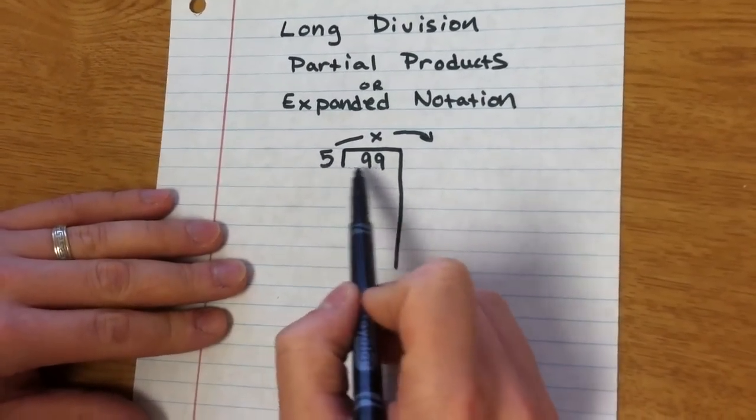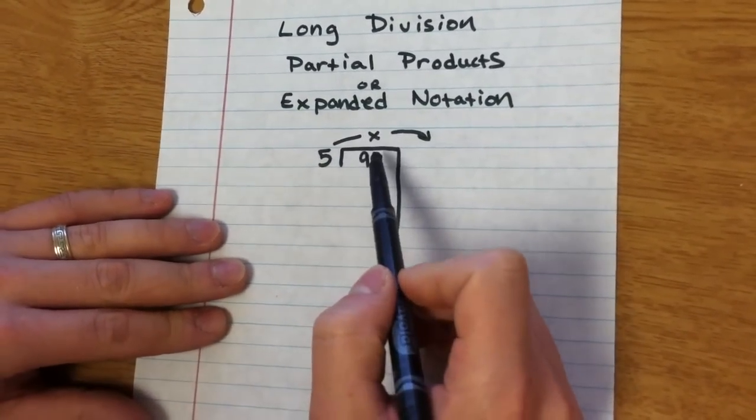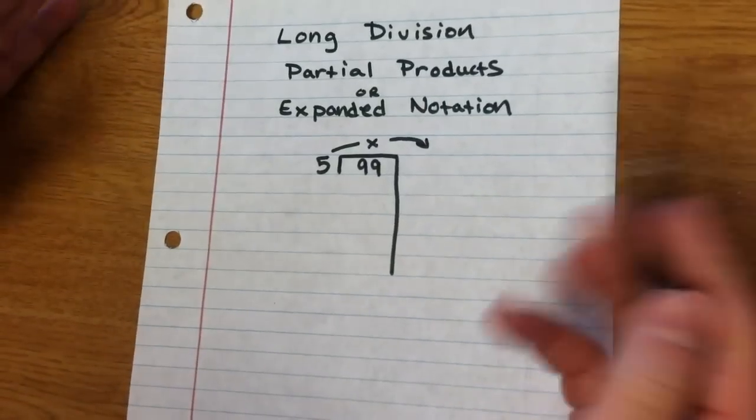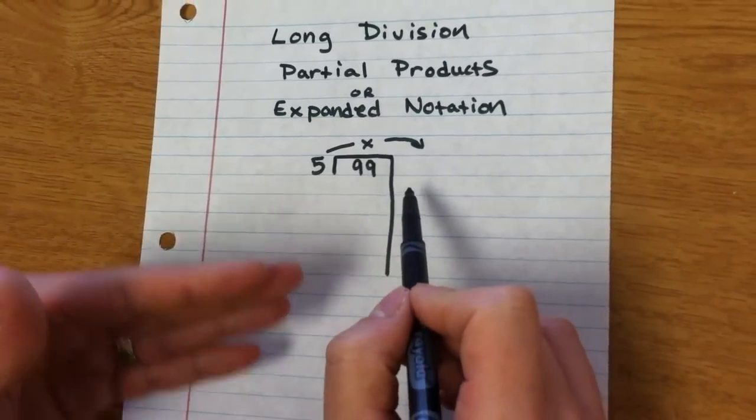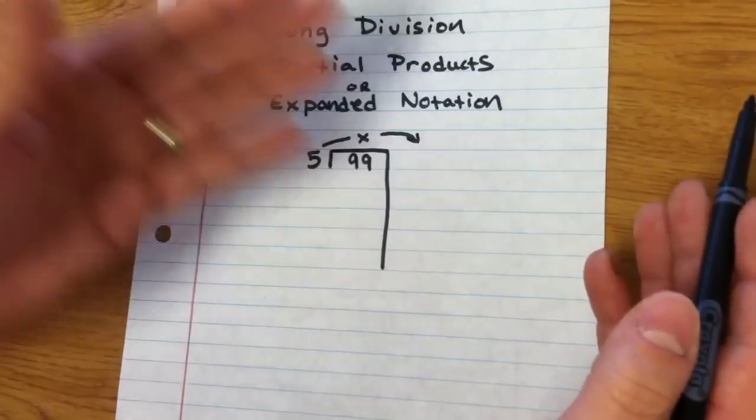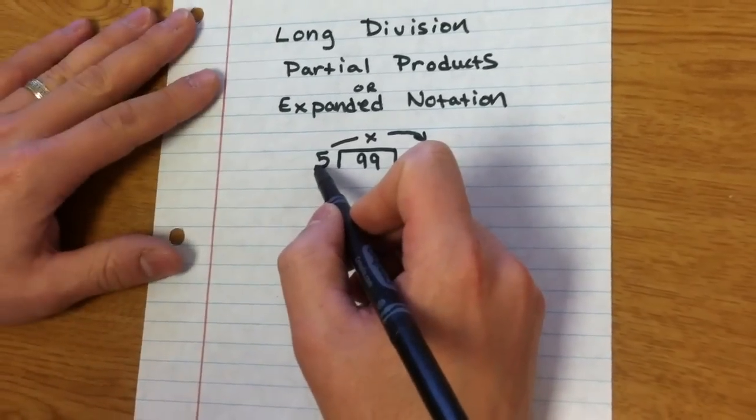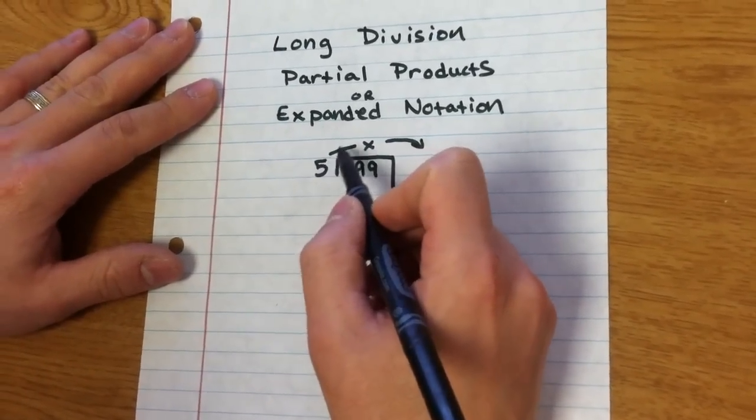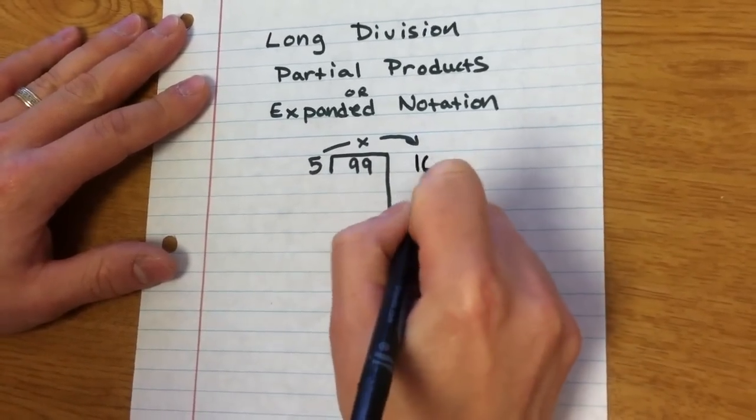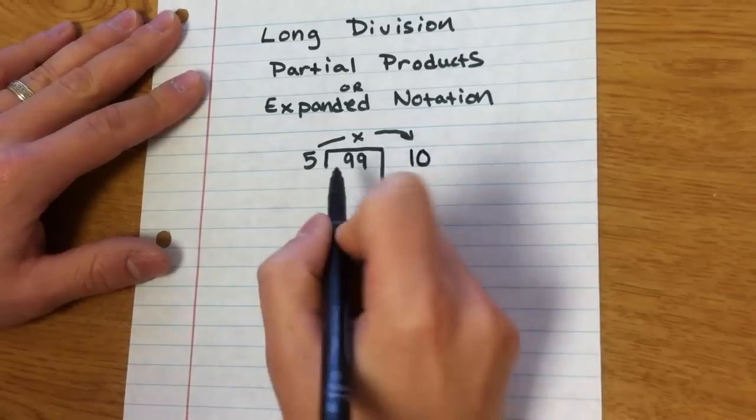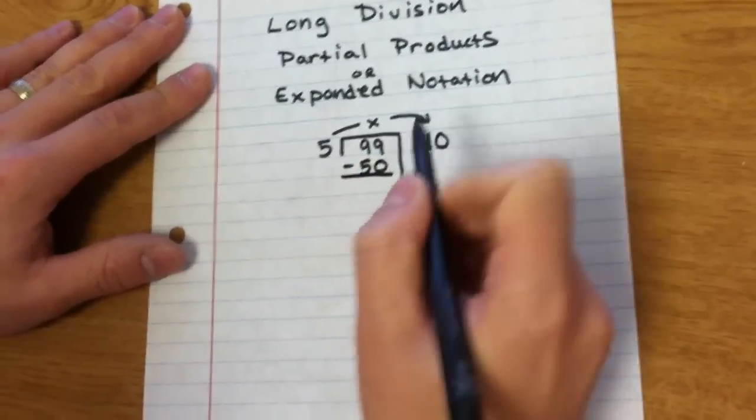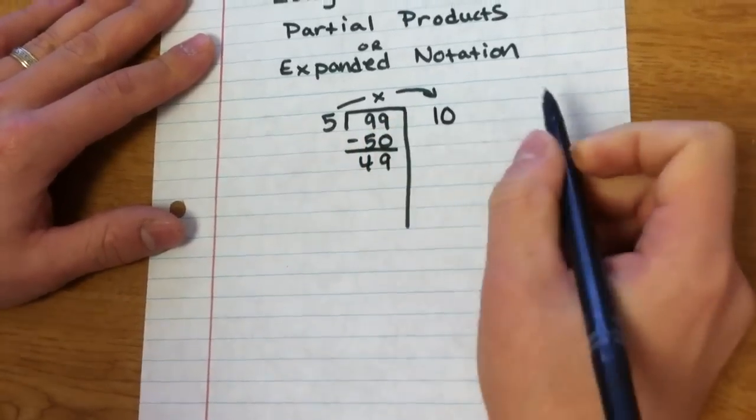So we need to get ourselves going into this whole number. And depending on your multiplication skills, you can chisel away at this or you can go right into the whole thing. So I'm going to go with kind of an average, like a middle of the road way of solving this problem. I'm going to say, 5 times 10. I know what 5 times 10 is. 5 times 10 is 50. So I'm going to subtract 50 from 99 and I get 49.